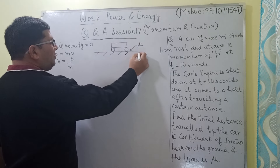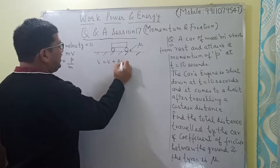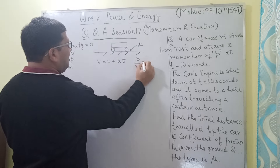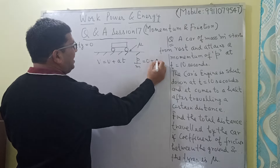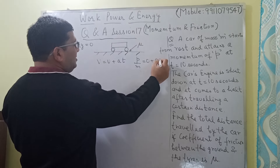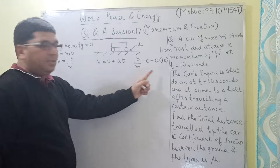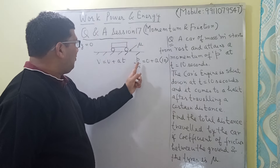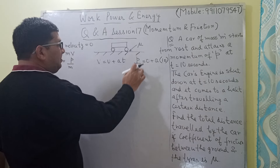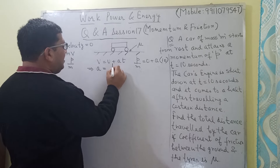Using the equation of motion for uniform acceleration, V equals U plus A times t. The velocity at the 10th second is P by M, the initial velocity is 0, and the time is 10 seconds. From this equation we get the acceleration in the first part of the journey as P divided by 10M.